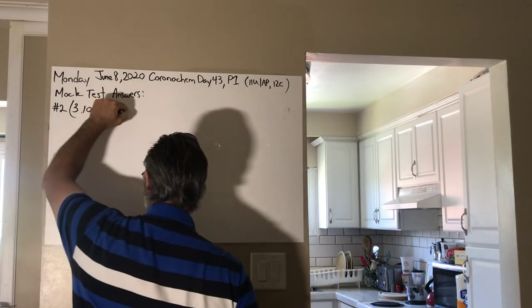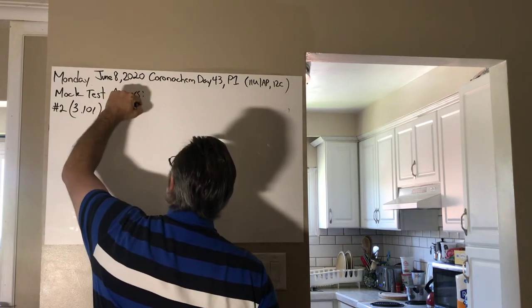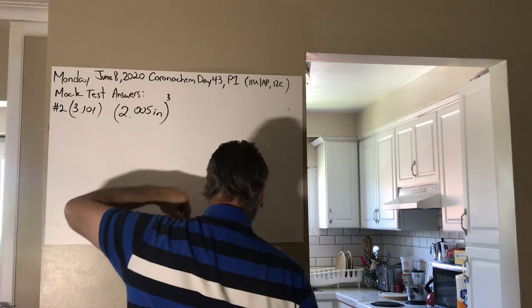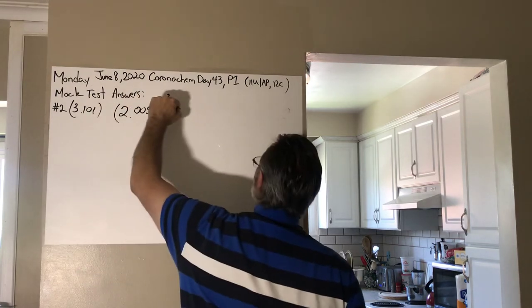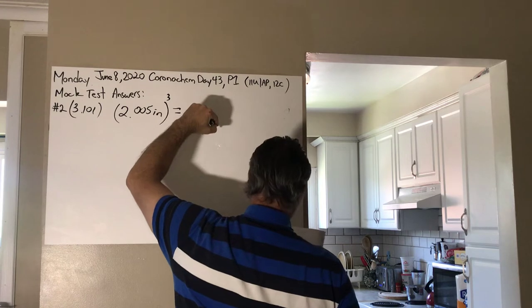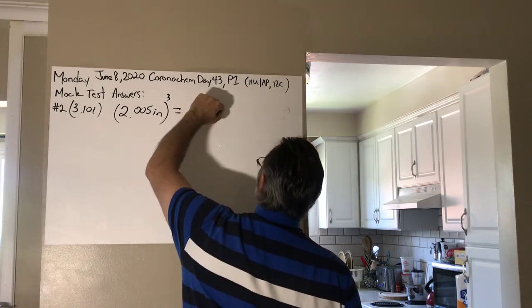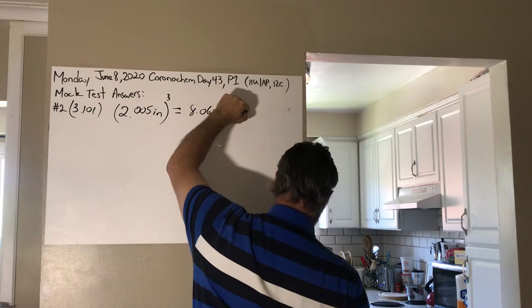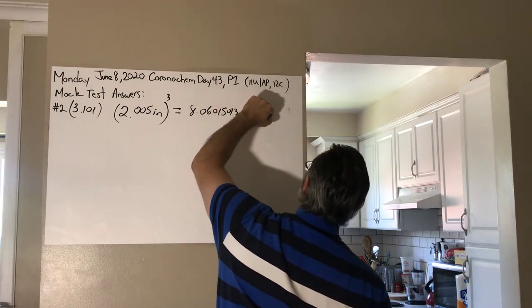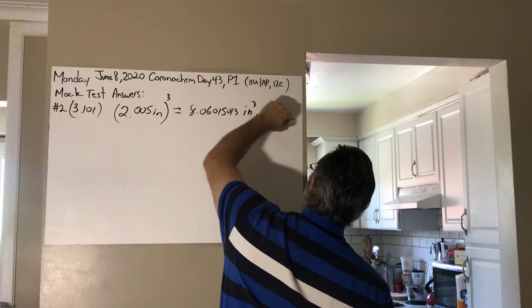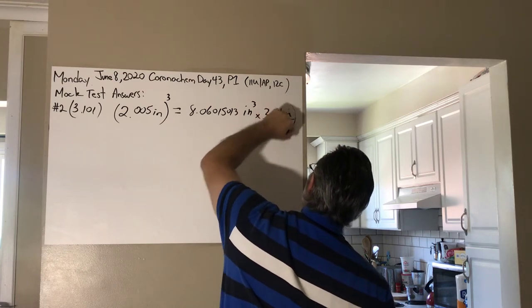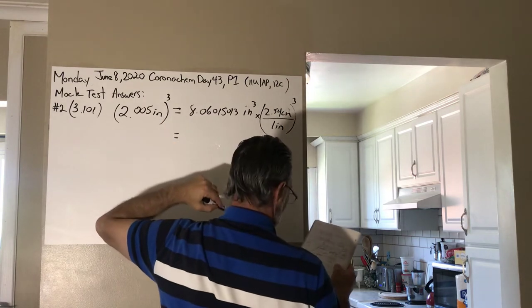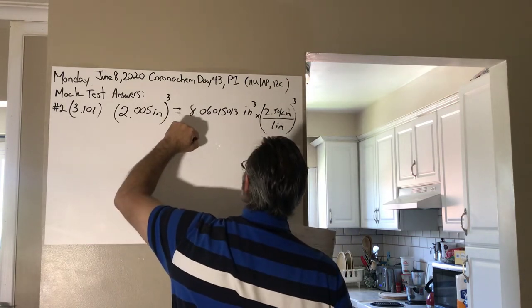It's a multi-step calculation, not overly difficult, but we'll do it step by step. So our cube is 2.005 inches a side. So we're going to cube that quantity, 8.06015013 inches cubed. We're going to convert that to centimeters by saying times 2.54 centimeters per inch. But remember to cube the conversion factor. And what you get as an answer is 132 cubic centimeters.